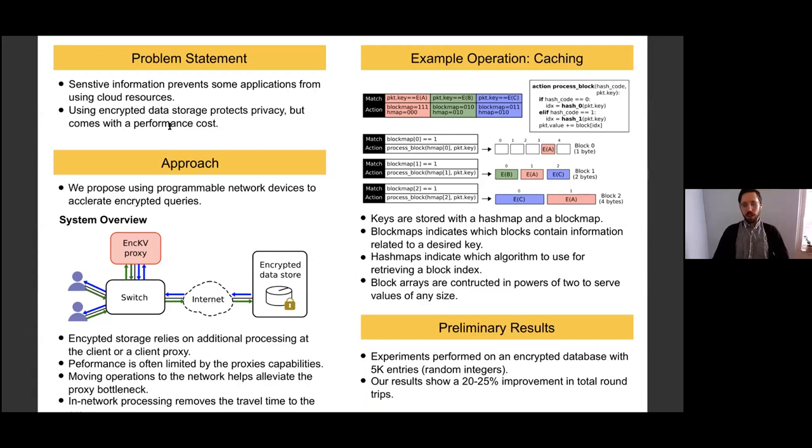Typically, a client will send a request. It'll be routed to a proxy. The proxy will handle encryption, decryption, and then it'll pass it to the remote storage. The idea is skip that trip to the proxy if we can. And in this case, with the caching, we're going to skip the trip to the remote storage entirely.